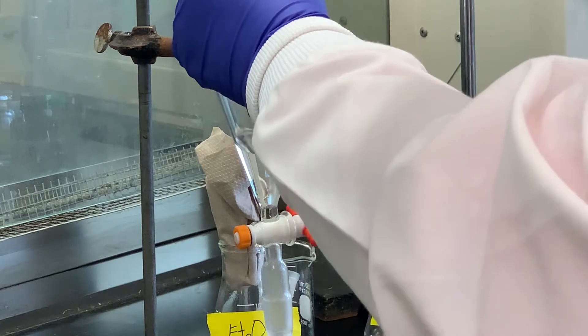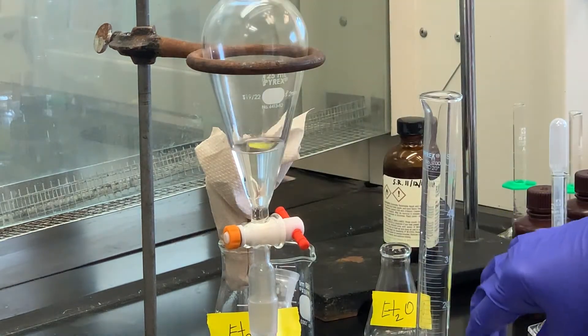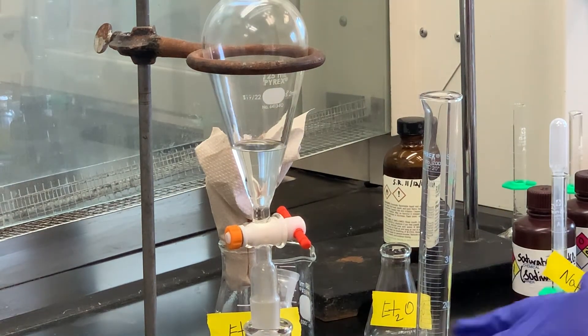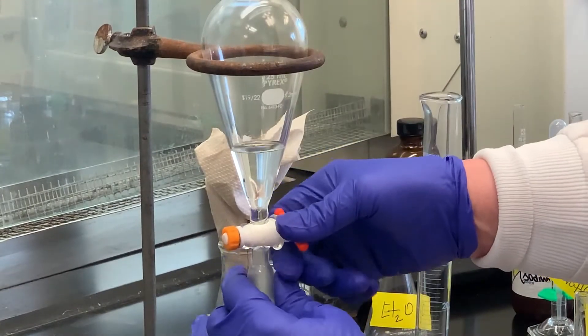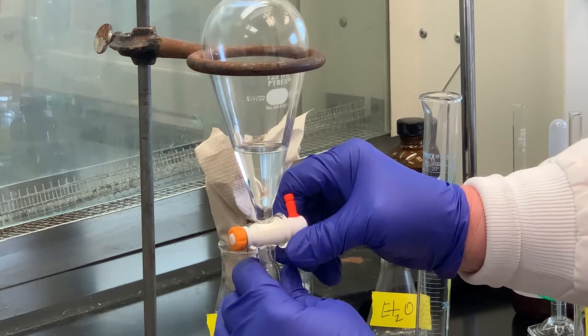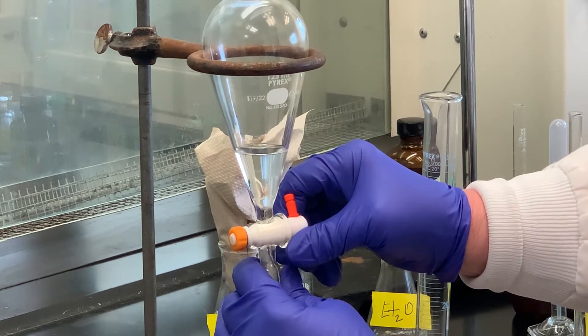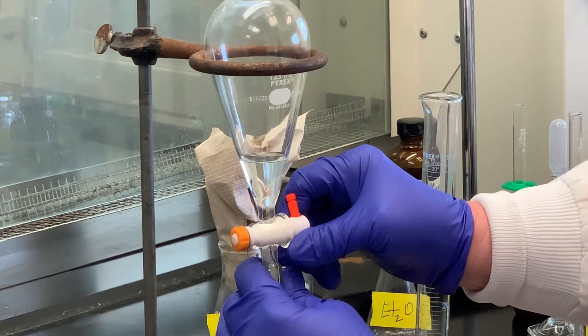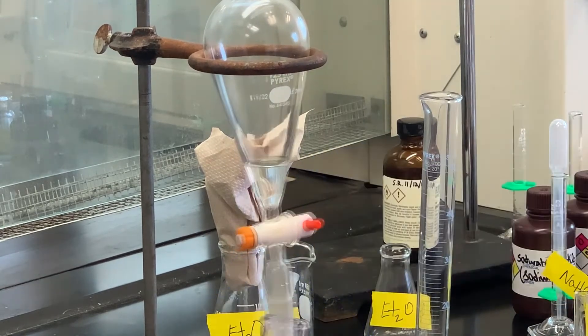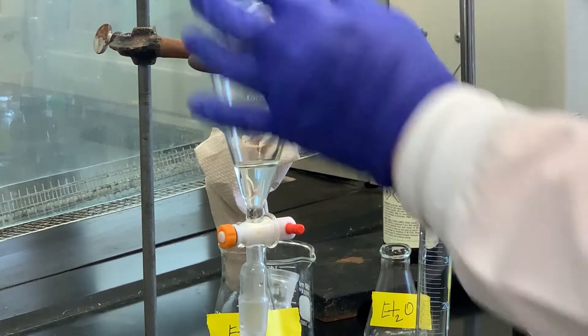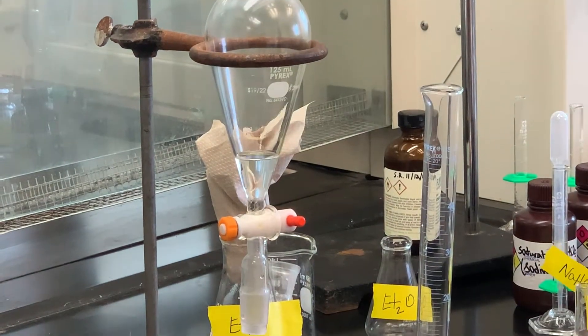So if the aqueous was the bottom layer before, then it's going to be the bottom layer now. Nothing's changed. So once I drain off the aqueous, I'm done with the aqueous layer. So I'm going to open this up and I'm going to drain this one a little slow because it is hard to see where that line is. And this is our aqueous. I'm done with that. So what we have in here now is the organic layer that contains our ketone, which is what we made from the oxidation.